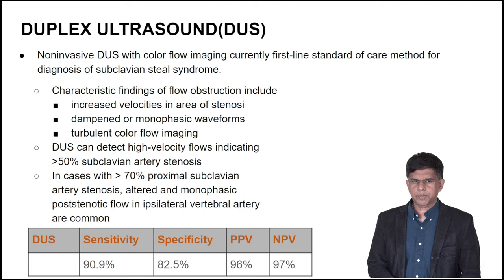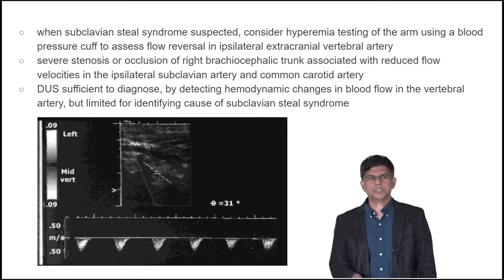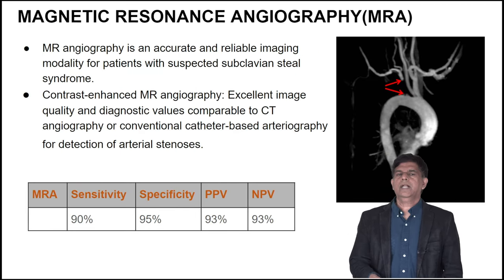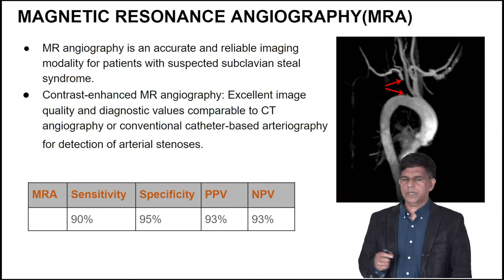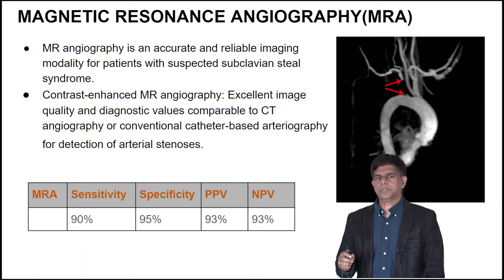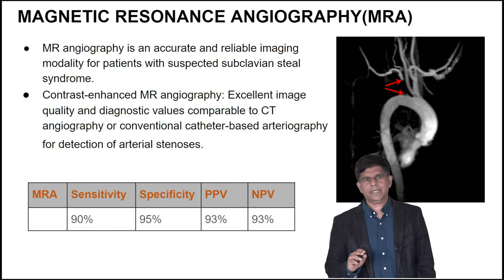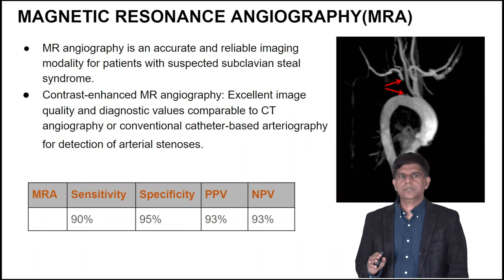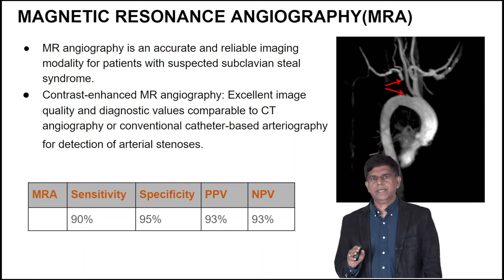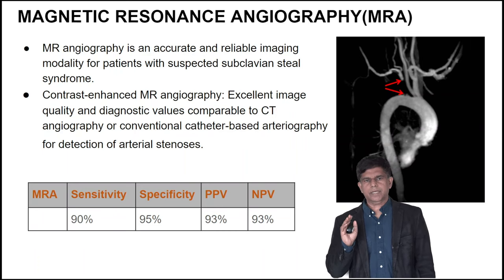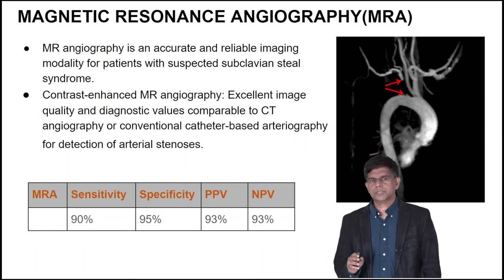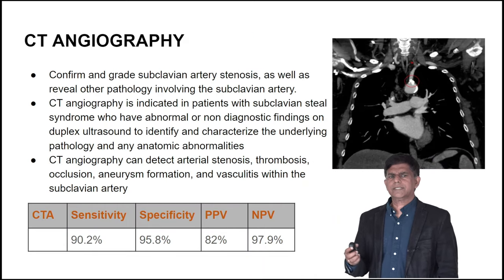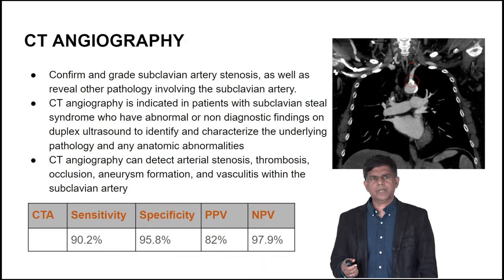The next step is MRA to confirm the diagnosis. MRA has very high sensitivity and specificity — almost 90 to 95%. You may want to use contrast-enhanced MRA to get excellent imaging. CT angiography is also an option, though more radiation is involved.